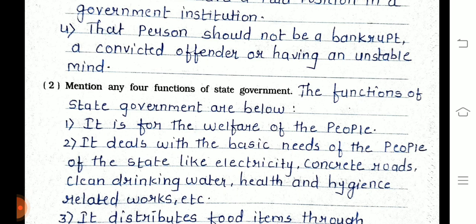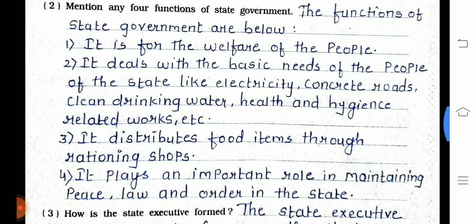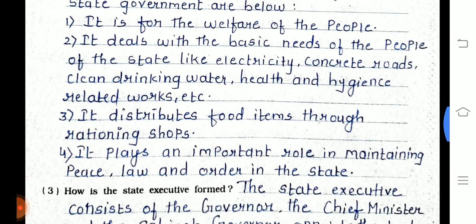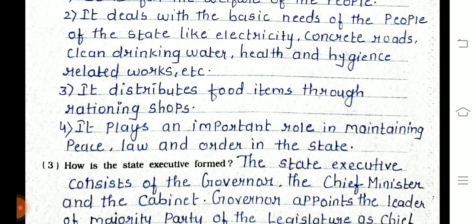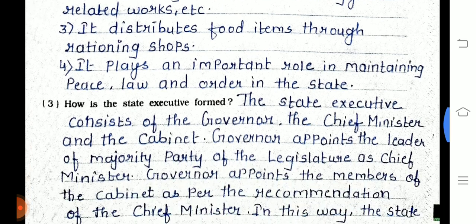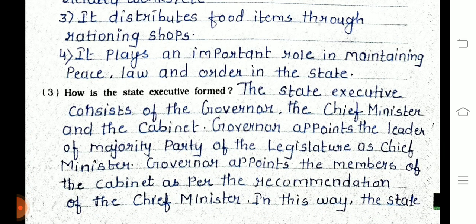Question 6, part 2: Mention any four functions of the state government. The functions are: it works for the welfare of the people; it deals with basic needs like electricity, concrete roads, clean drinking water, health and hygiene-related works; it distributes food items through rationing shops; and it plays an important role in maintaining peace, law, and order in the state.